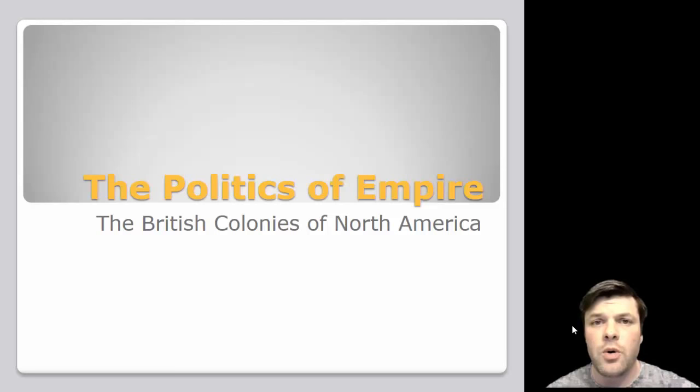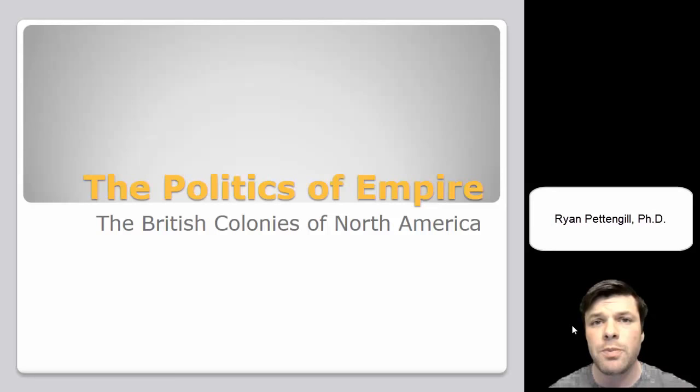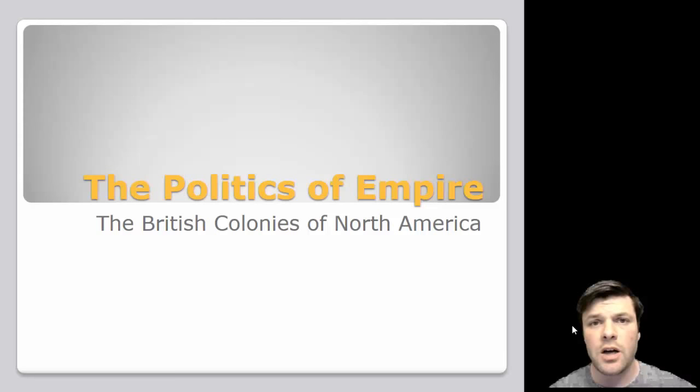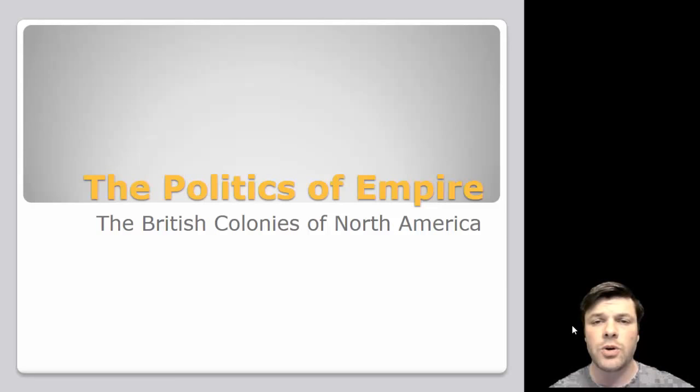Great to see you again. If you've been following along, you'll know that there are two primary sets of English North American colonies established by the mid-1620s. You've got the tobacco colonies in Virginia and Maryland. About 500 miles to the north, you've got the New England colonies, settled by Puritans and religious exiles hoping to purify their church and seek religious freedom in the new world.